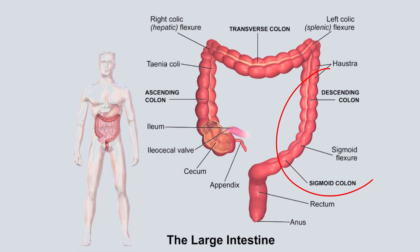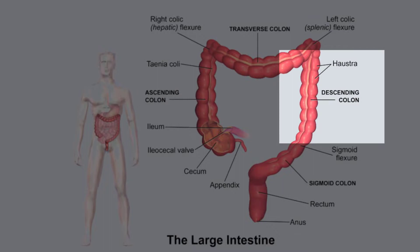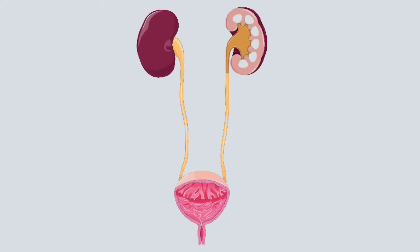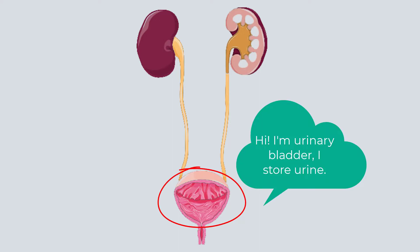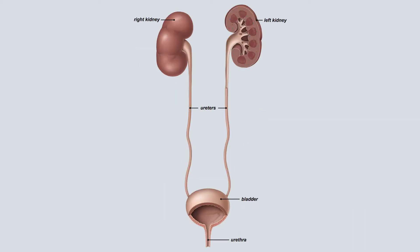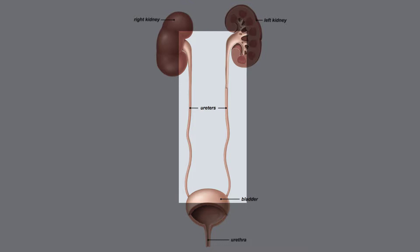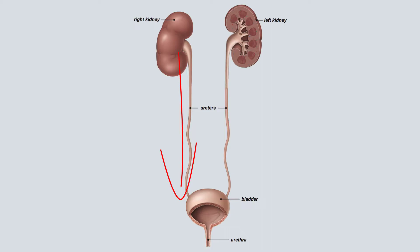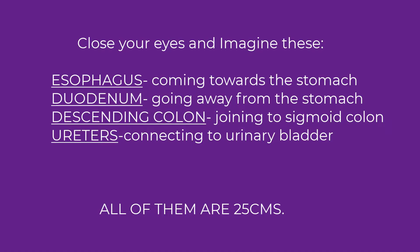The sigmoid colon is a continuity of the descending colon, which is one part of the large intestine measuring 25 centimeters. The third reservoir is for urine — the urinary bladder — and the ureters connected to it are also 25 centimeters each. Imagine the esophagus coming to the stomach, the duodenum going out, the descending colon coming towards the sigmoid colon, and the ureter approaching the urinary bladder — all 25 centimeters.